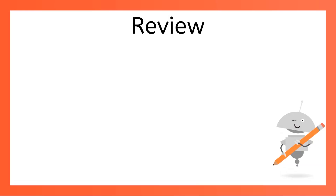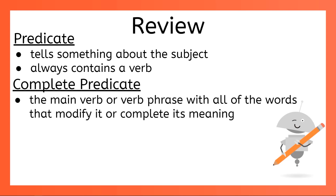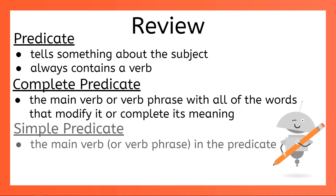Let's review. You already know that the predicate tells something about the subject, and the predicate always contains a verb. Now you also know that the complete predicate is the main verb or verb phrase with all of the words that modify it or complete its meaning, and the simple predicate is just the verb or verb phrase in the predicate. You learned a lot about predicates today.